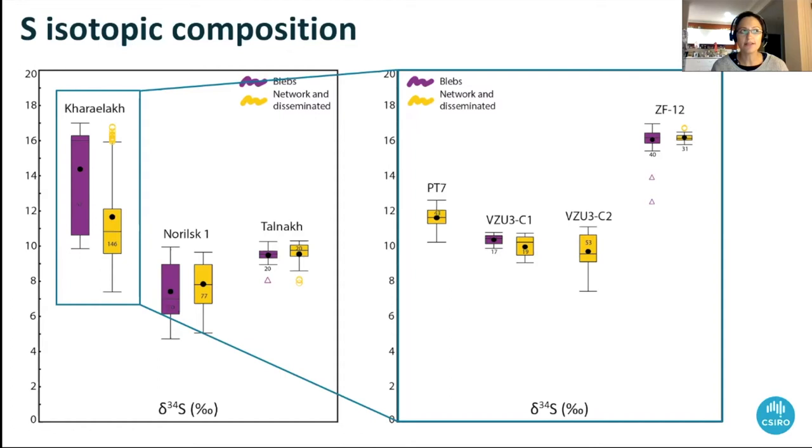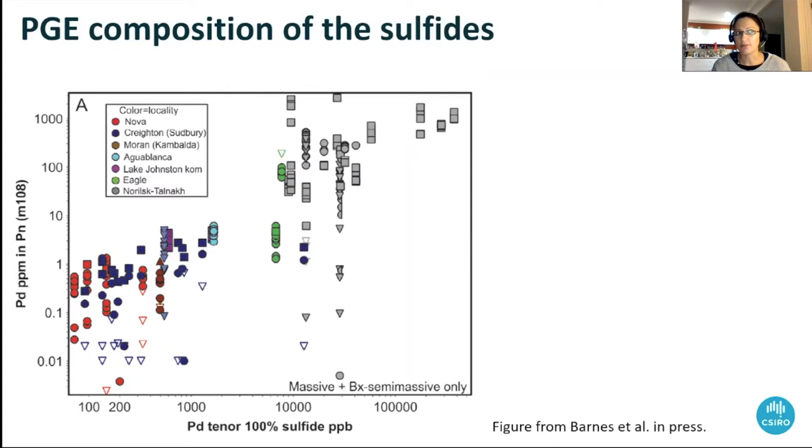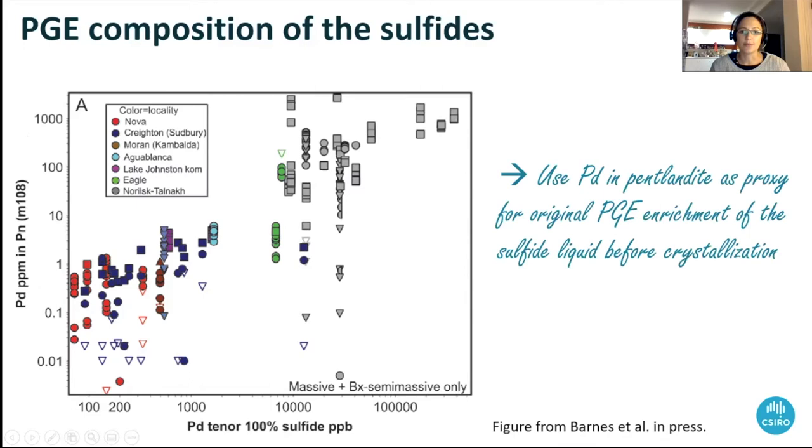We also want to look at the metal enrichment of our sulfides. This is a plot from a recent paper by Steve Barnes which is now in press. That paper was looking at sulfide textures in pentlandite. This is plotting platinum group element tenors in 100% sulfides and PGE in PPM in pentlandite. You can see this really nice correlation between the two, which is why we basically decided to use palladium in pentlandite as a proxy for the original PGE enrichment of the sulfide liquid before crystallization.